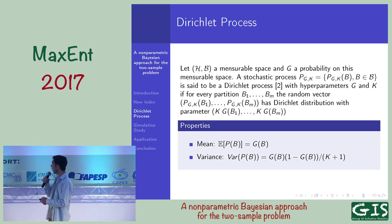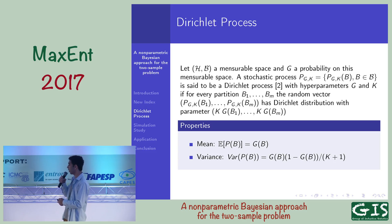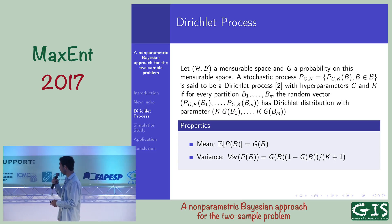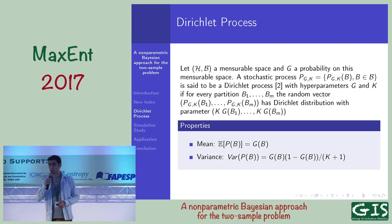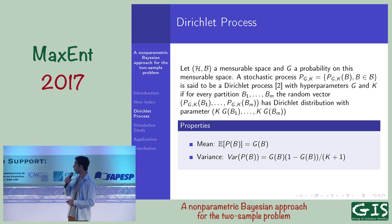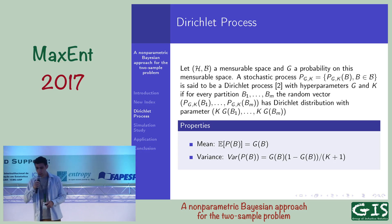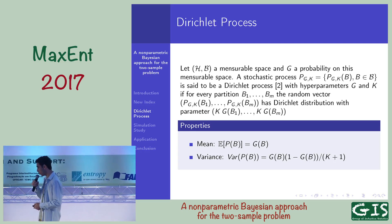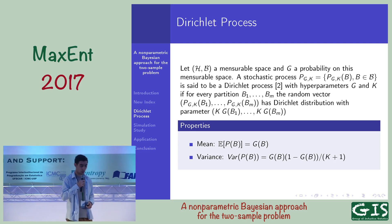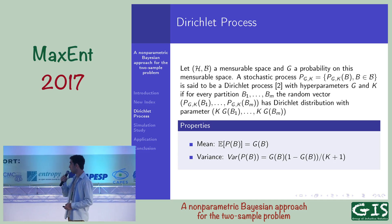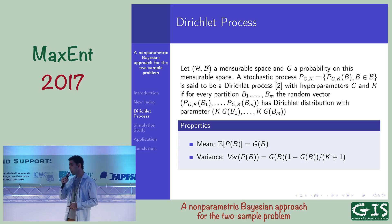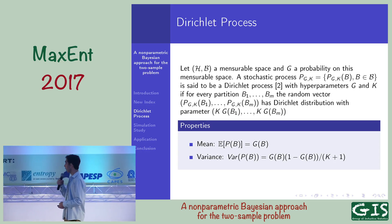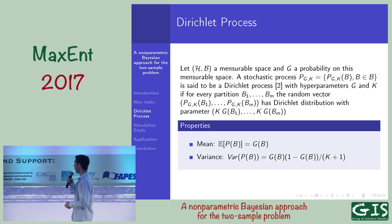A Dirichlet process has two hyperparameters: G, the base probability, and K, the concentration parameter. If we have a partition of our space, the finite-dimensional distribution of the Dirichlet process has a Dirichlet distribution with parameters K times G evaluated in each set of the partition. The mean of the Dirichlet process is the base probability, and the variance depends on K.